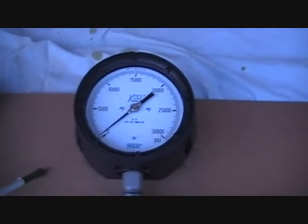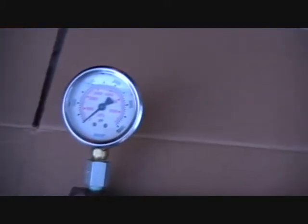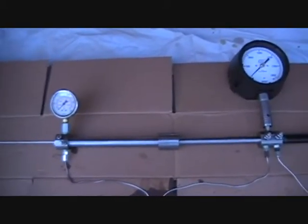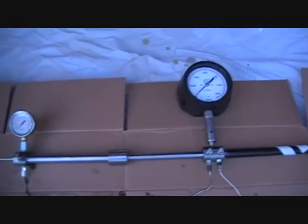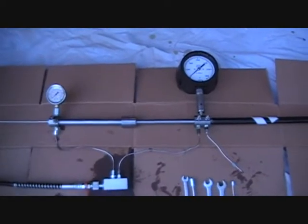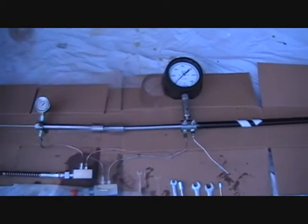Down at about zero psi here on the output and on the input. This skinny rod back here is a telltale rod. It's attached to the piston. That shows how far the piston is, so I can tell how much high pressure volume I've got left to use. I'm going to go ahead and set this up on a tripod and then proceed with the testing.